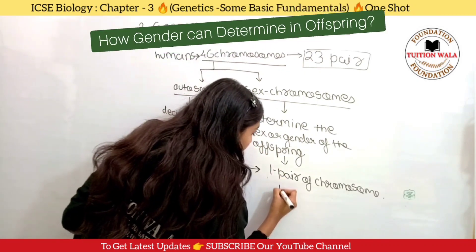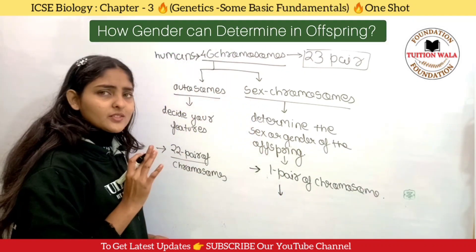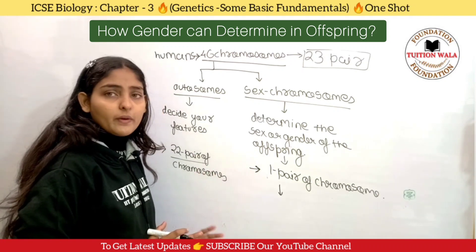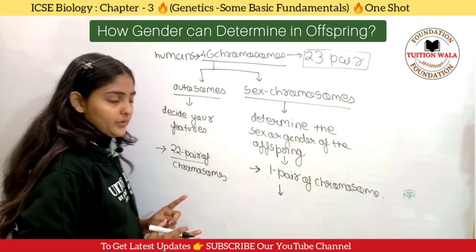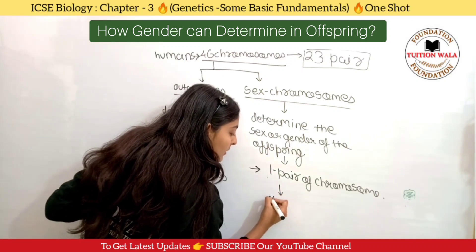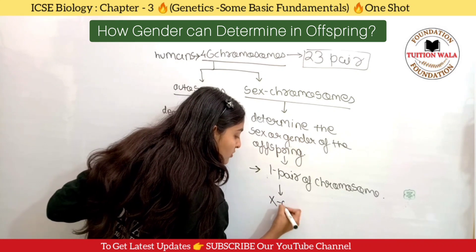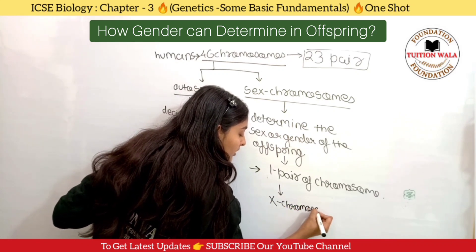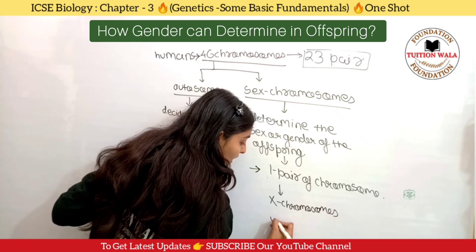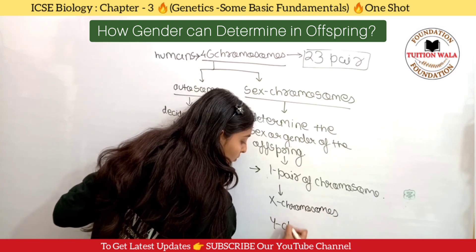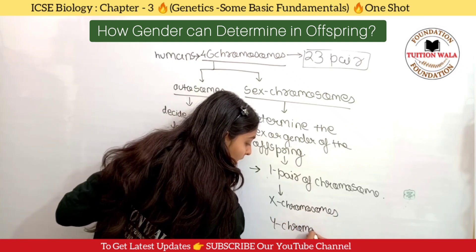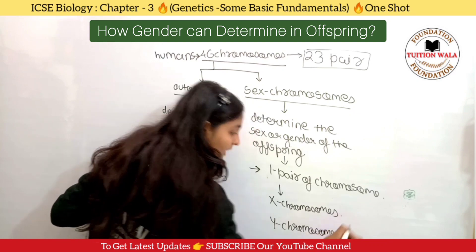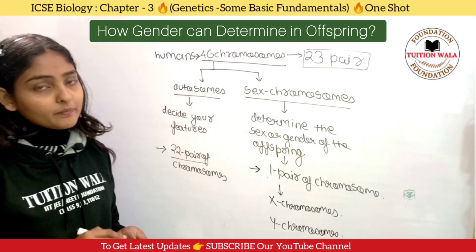Autosomes are 22 pairs. Sex chromosomes are one pair. You have the X chromosome and the Y chromosome. So in your sex chromosomes, you will have X and Y chromosomes.